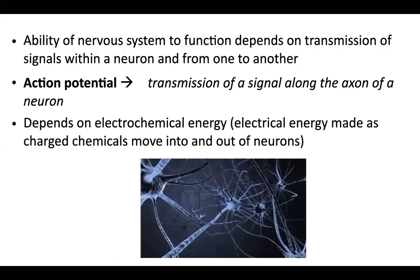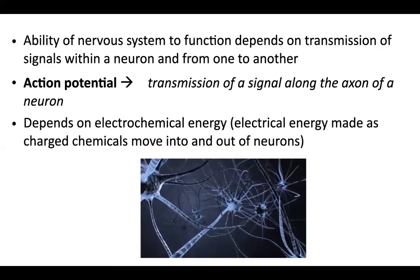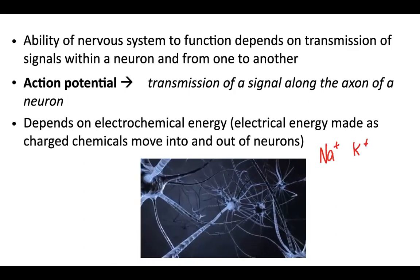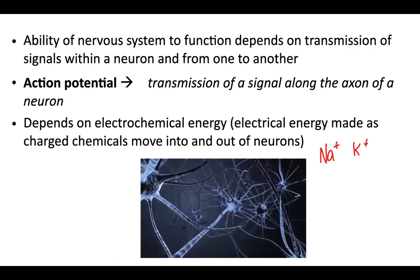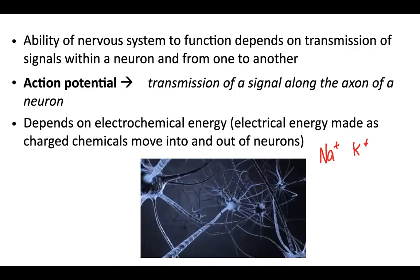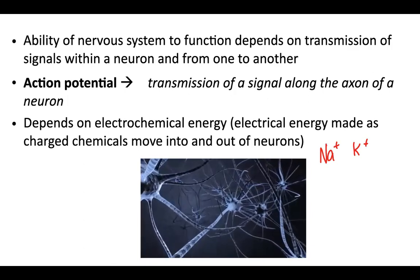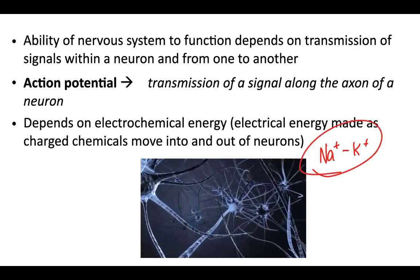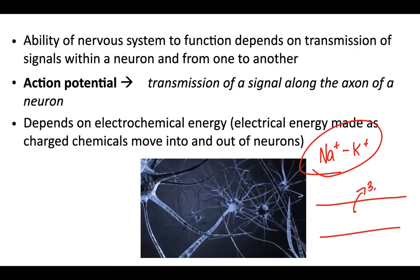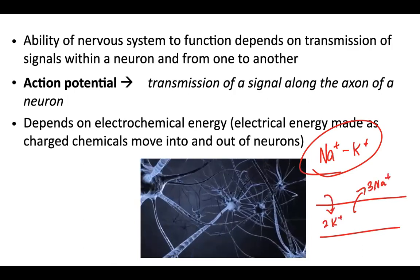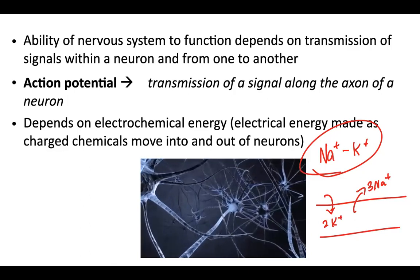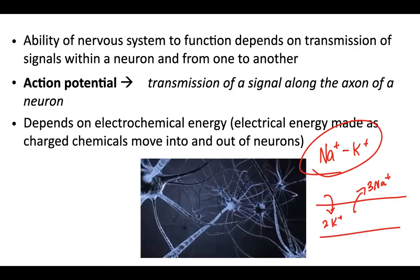Action potentials depend on electrochemical energy — electrical energy made as charged chemicals move in and out of neurons. The two charged particles we'll be talking about are sodium and potassium. If that sounds familiar, it should, because last year when we talked about transport in and out of cells, one of the active transport methods we discussed are called cell membrane pumps. One pump in particular is called the sodium-potassium pump.